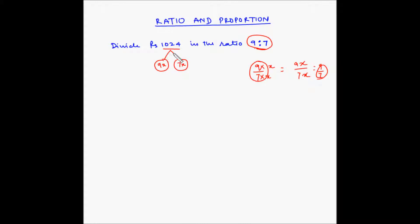Basically what we have to do is we have to split rupees 1024 into two parts. One part is 9x, the other part is 7x. Simple equation will be 9x plus 7x is equal to 1024, or 9 plus 7 is 16 times x is equal to 1024, or x is equal to 1024 divided by 16.